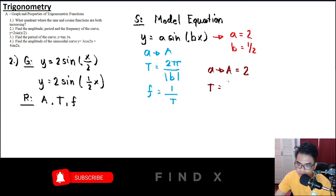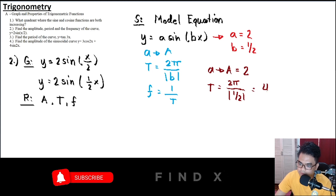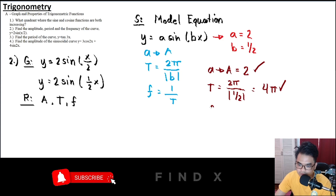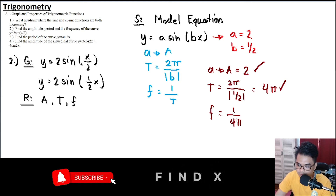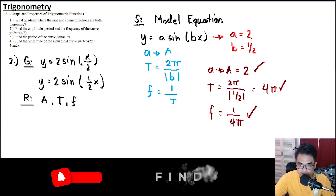For the period T, the formula is T = 2π divided by the absolute value of B, which is ½. Simplifying, T = 4π. For the frequency, it is just the reciprocal of the period, so frequency = 1/(4π).